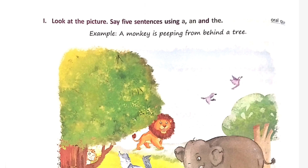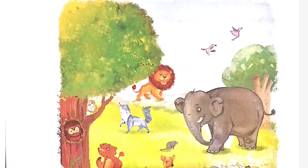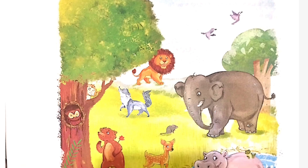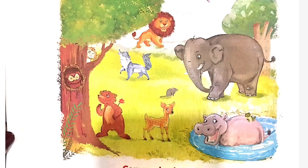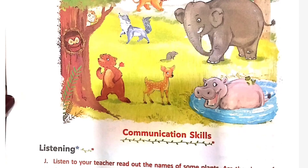Look at the picture and write five sentences using A and THE. For example: The sky is blue. An owl is sitting in a hole in the tree. A bear is looking at the owl. The bear has a flower in its hand. A hippo is swimming in the pond. A frog is sitting on the hippo's back. A deer is standing between the bear and the hippo. A rat is looking at an elephant.